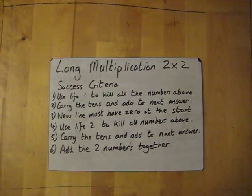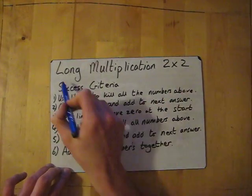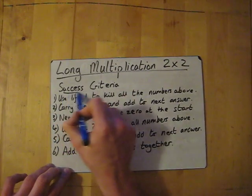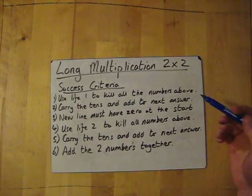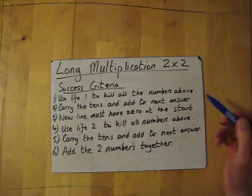All right, this is long multiplication, two numbers by two numbers. So the success criteria is a bit longer, but bear with me. It's a lot of stuff that you know already, and there's a couple of little tweaks.